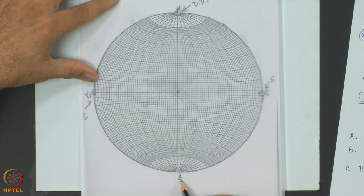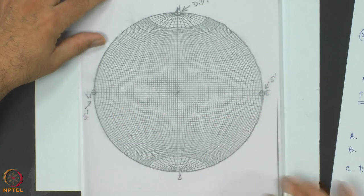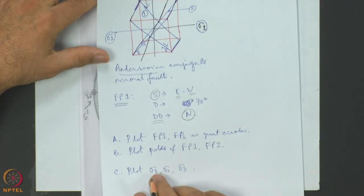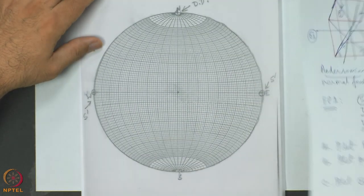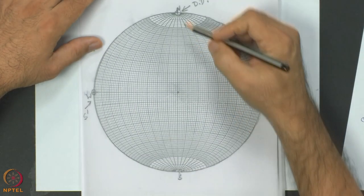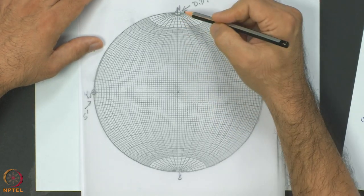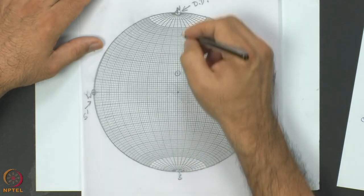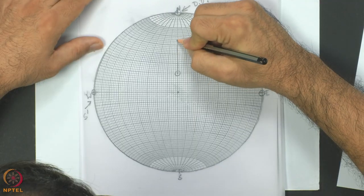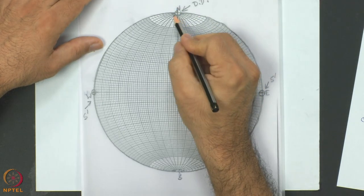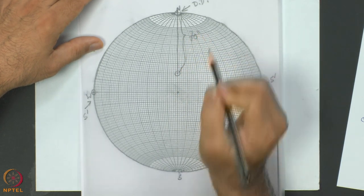Note that 'S' here means south, and 'S dash' means strike - they are different, so I mark strike with S dash. The dip amount given for fault plane 1 is 70 degrees. From the dip direction marked on the periphery, I have to move 70 degrees inside. The angle covered here is 70 degrees.